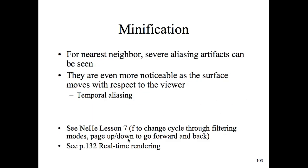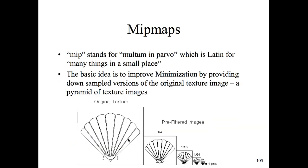Both minification and magnification cause distortion. Distortion in computer graphics terms is called artifacts — things introduced into the image that didn't exist. Depending on how you're removing and populating pixels, the shape or concept of the object changes — for example, something that looks like a baseball could appear to be a melon after distortion.